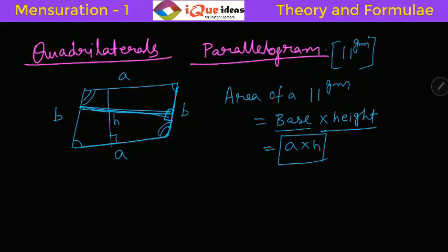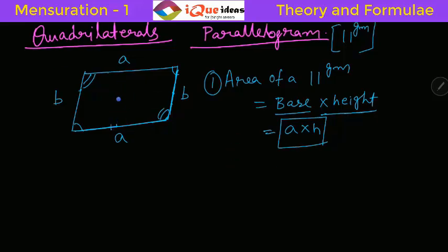Now there is one important property that is related to the diagonals of a Parallelogram. So let me say this is the first property. Then the second property is related to the diagonals of Parallelogram. So suppose in this Parallelogram in which the sides are A and B and let's say the diagonals are D1 and D2 and suppose this point is M.